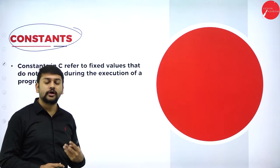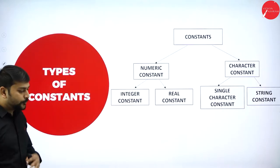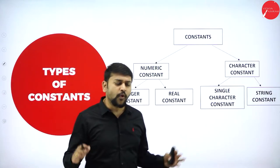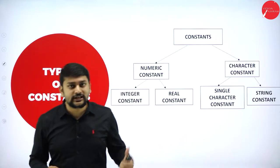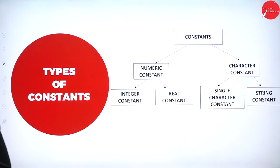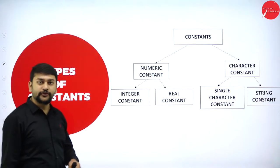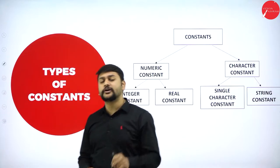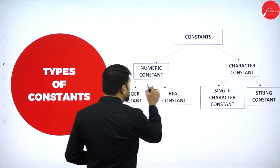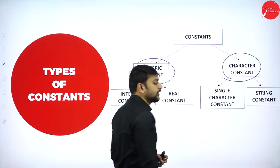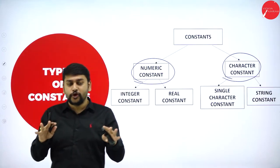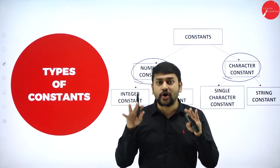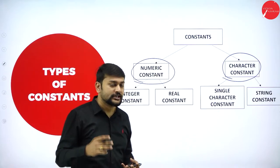Let me explain more about constants with examples. Before getting into examples, let's understand what exactly constants are and how many different types of constants there are. This is a very important question from an exam point of view. When it comes to constants, we have two different types: the first is numeric constant and the second is character constant. Any value is what I will call a constant.